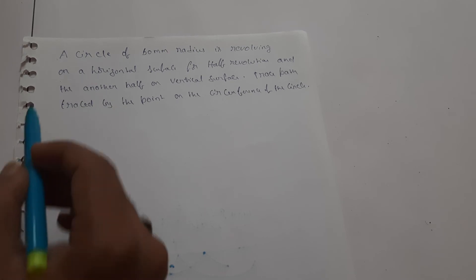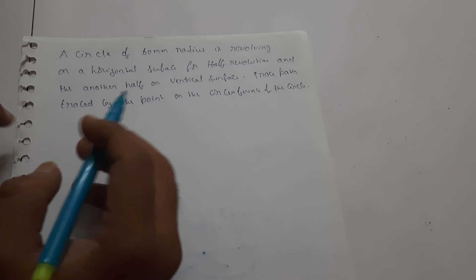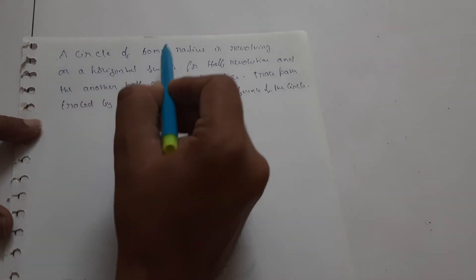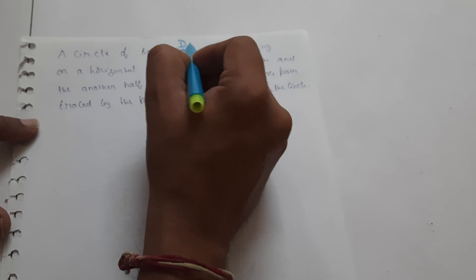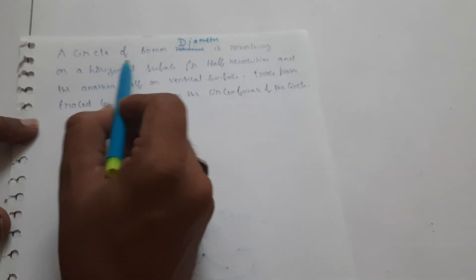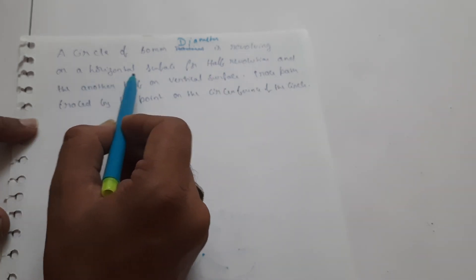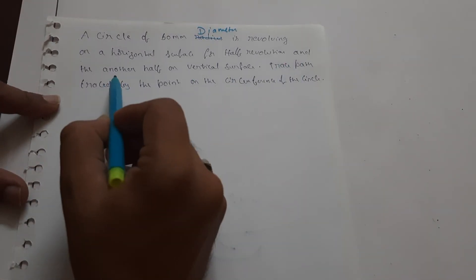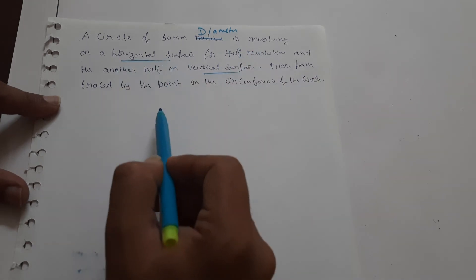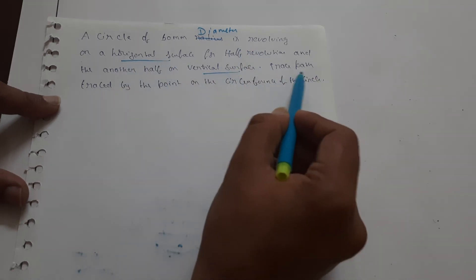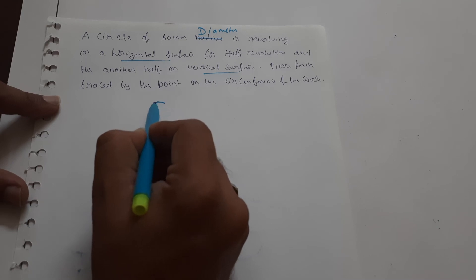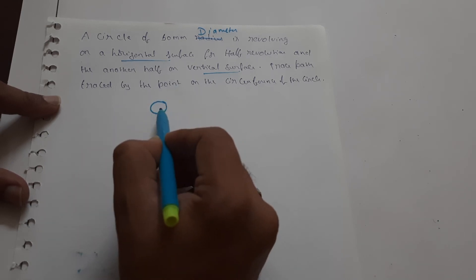Okay, so now we have a cycloid problem. In this video, we will check the problem and trace it. A circle of 60mm diameter — note it is diameter, not radius — is revolving on a horizontal surface for half a revolution, and the other half is on a vertical surface. We need to trace the path traced out by a point on the circumference of the circle.